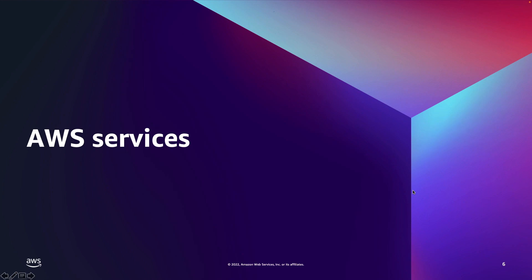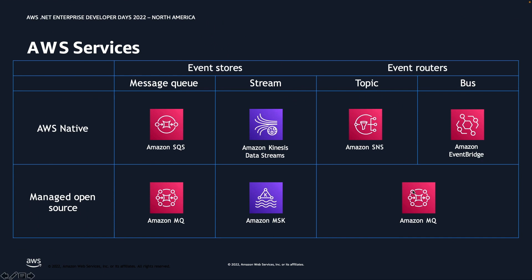Now let's talk about AWS services that can help you solve these challenges. At a broad level, we have two categories: event store and event router. Think of an event store as a buffer that holds onto your events until the consumer is ready. An event router sends messages and events between software applications. Within the store, we have a messaging queue — Amazon SQS — and on the open-source side, Amazon MQ. For streams, we have Amazon Kinesis Data Stream, and Amazon MSK for managed Kafka.